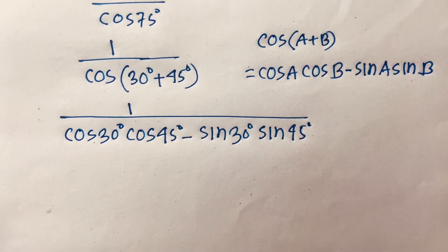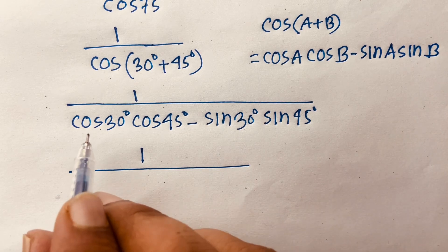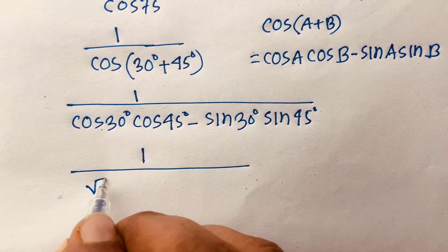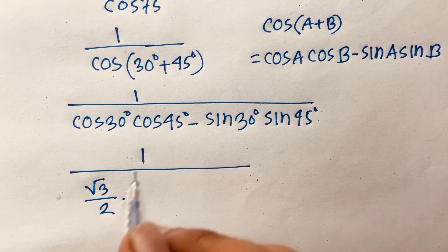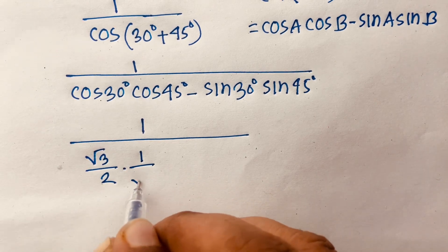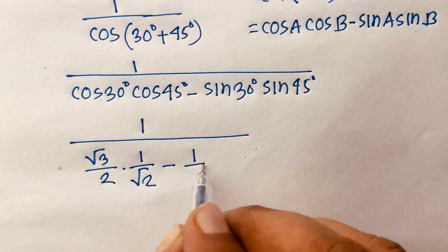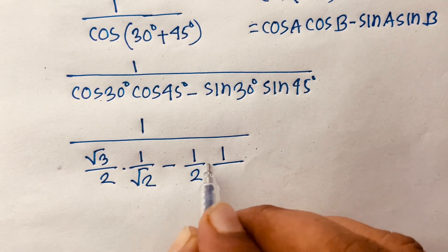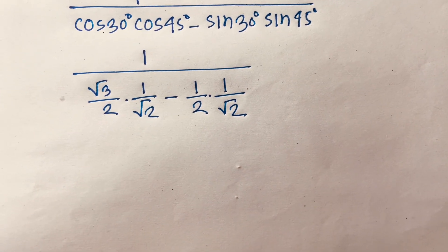Substituting the known values: cos 30° = √3/2, cos 45° = 1/√2, sin 30° = 1/2, and sin 45° = 1/√2. So we have 1 over (√3/2 · 1/√2 − 1/2 · 1/√2).